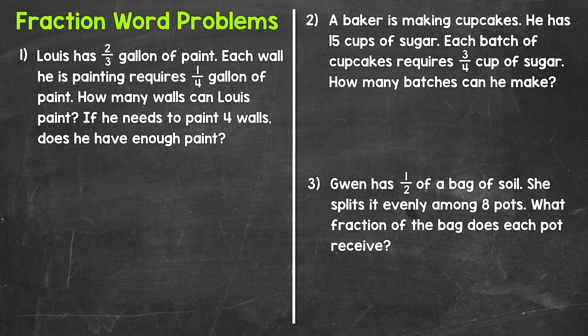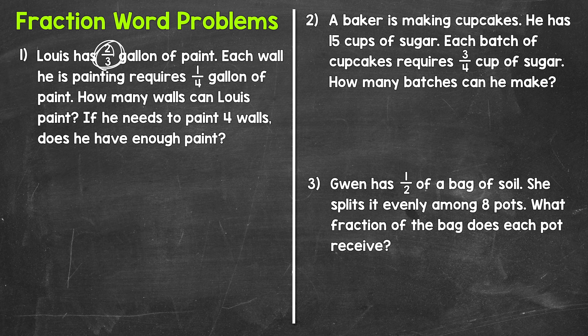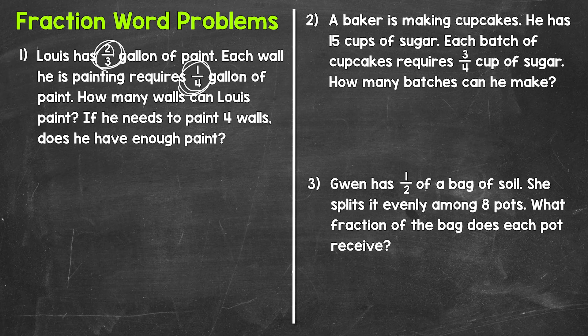Let's jump into number one where we have Louis has two-thirds of a gallon of paint. Each wall he is painting requires one-fourth of a gallon of paint. How many walls can Louis paint? If he needs to paint four walls, does he have enough paint? So thinking through this problem, Louis is starting with two-thirds of a gallon of paint and he is splitting or dividing that paint into groups of one-fourth of a gallon. Each wall needs one-fourth of a gallon.